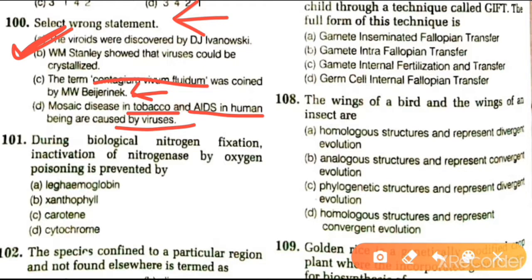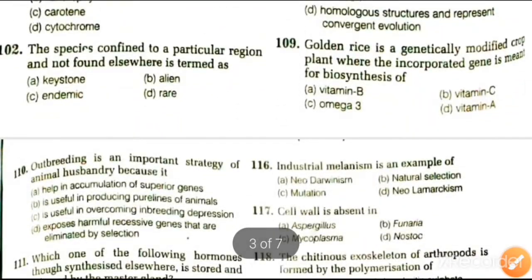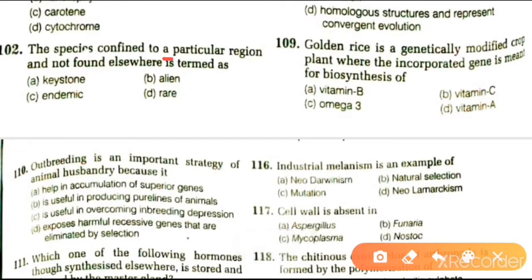Next question: during biological nitrogen fixation, the inactivation of nitrogenase by oxygen poisoning is prevented by which compound? Options are leghaemoglobin, xanthophyll, keratin, cytochrome. The answer is leghaemoglobin.